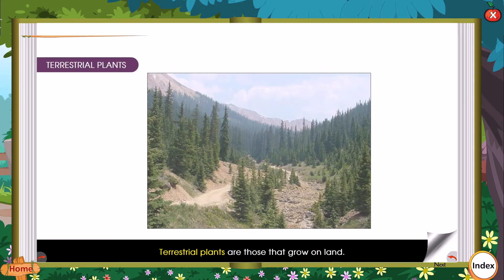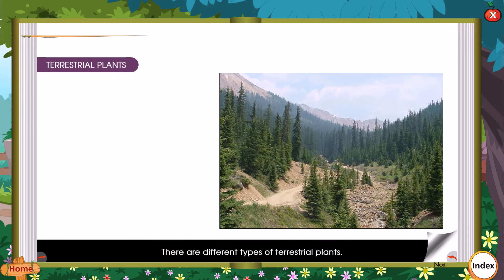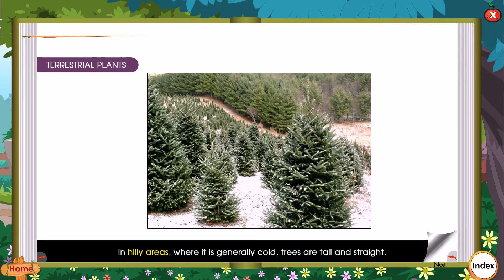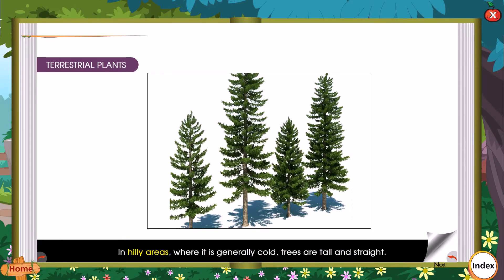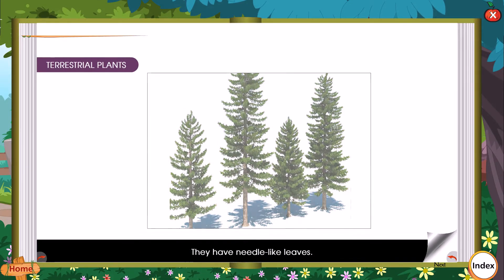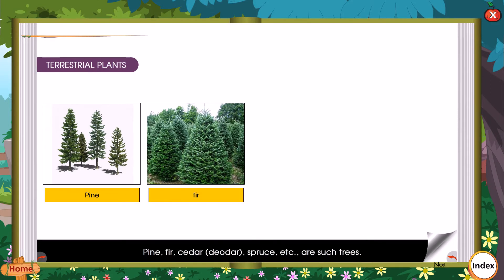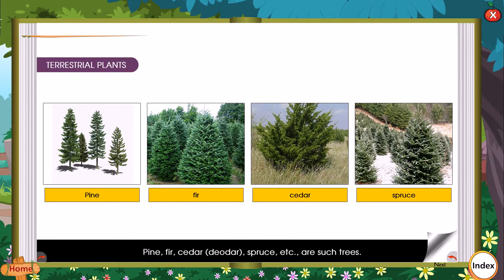Terrestrial plants are those that grow on land. There are different types of terrestrial plants. In hilly areas, which are generally cold, trees are tall and straight. They normally do not have big branches. They have needle-like leaves. Pine, fir, cedar, deodar, and spruce are such trees.